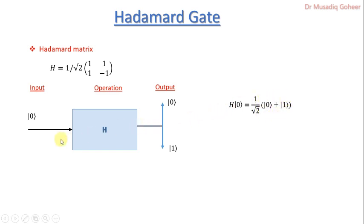Similarly, if you apply input 1 then the operation of Hadamard gate will be performed and the output will be 0 minus 1.